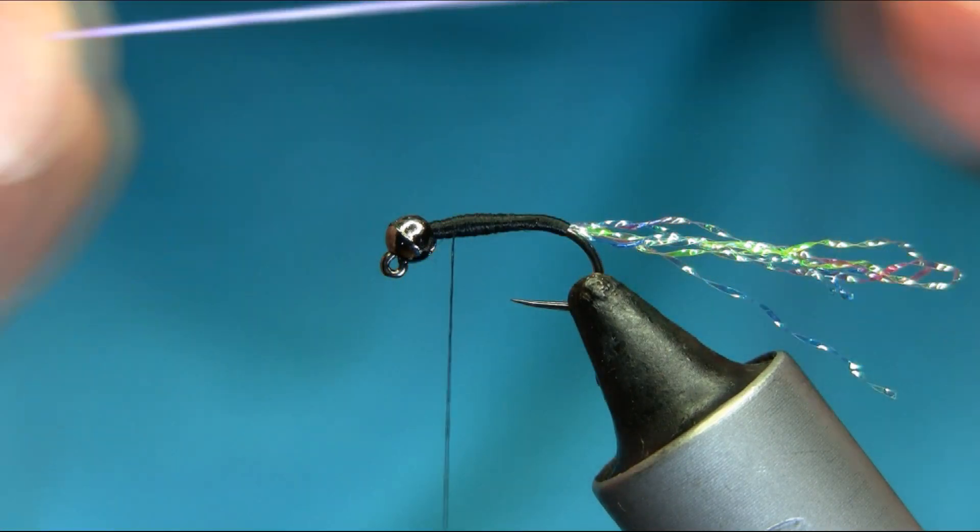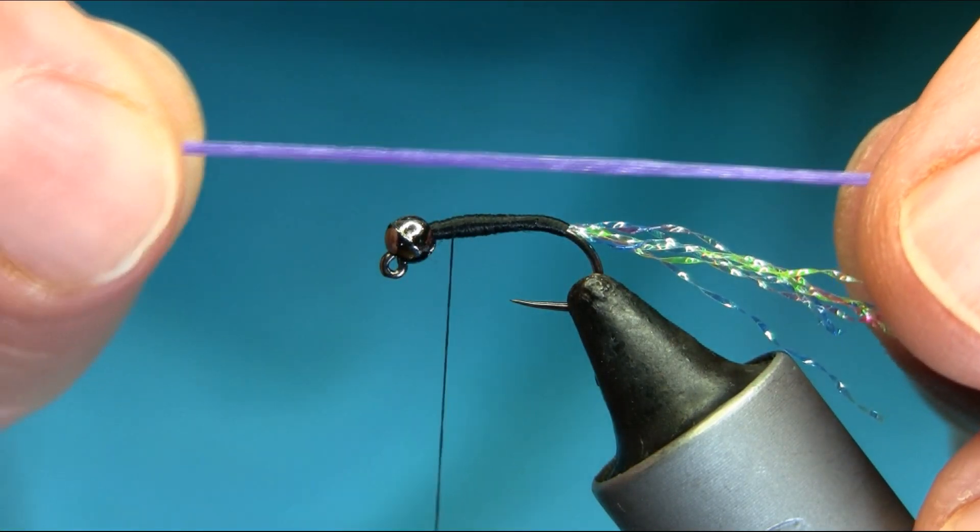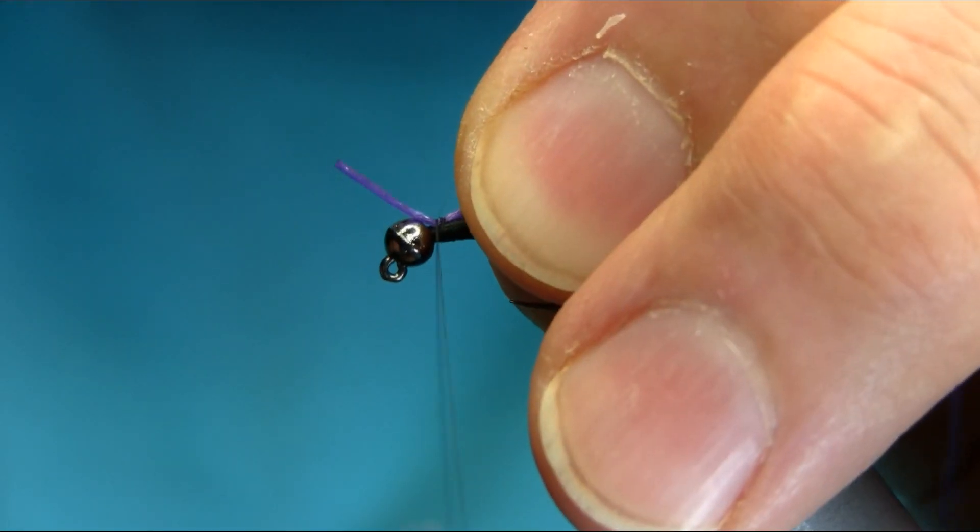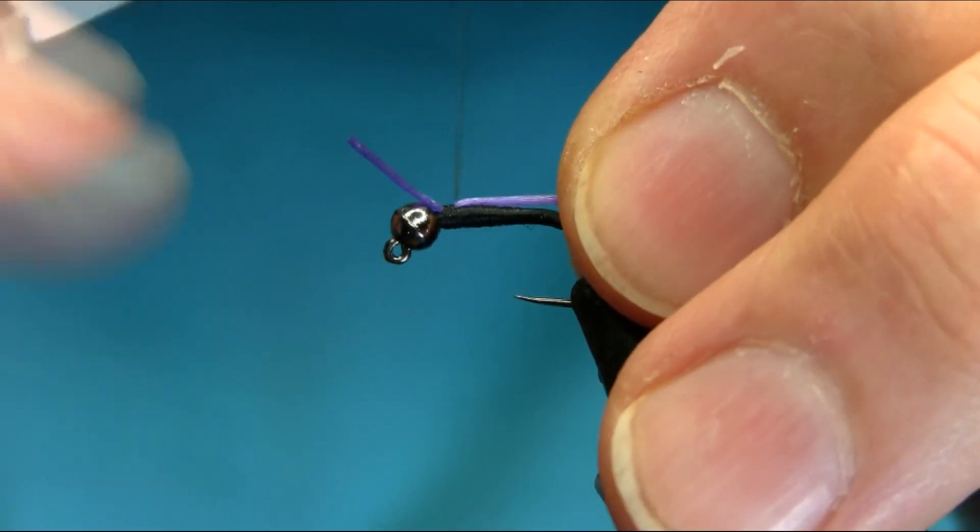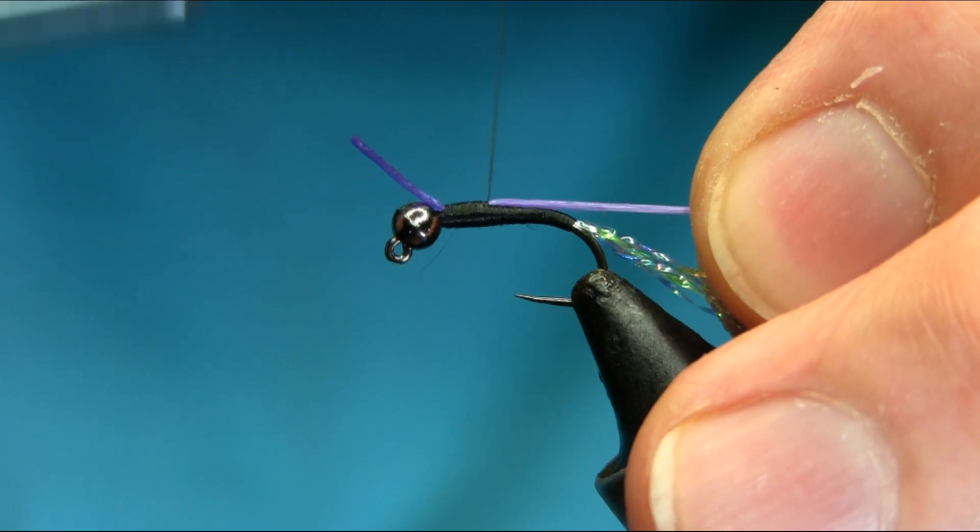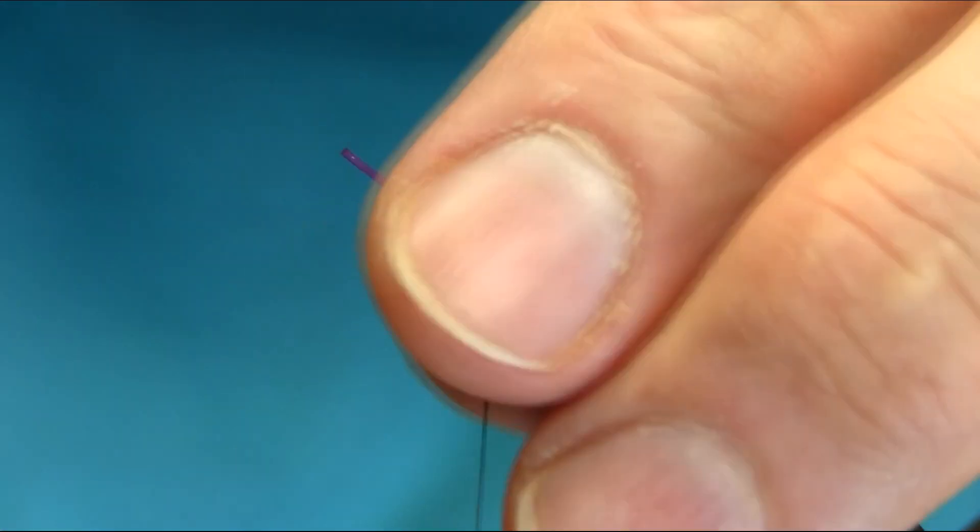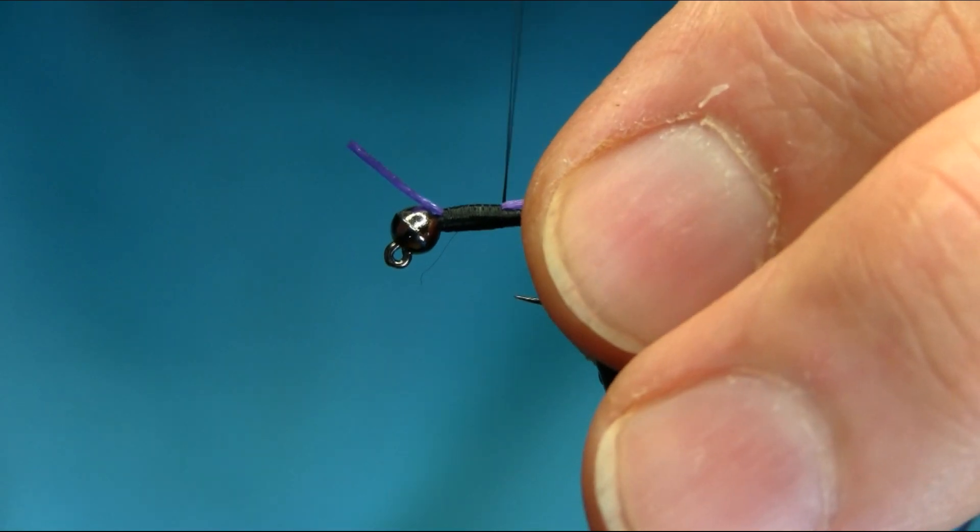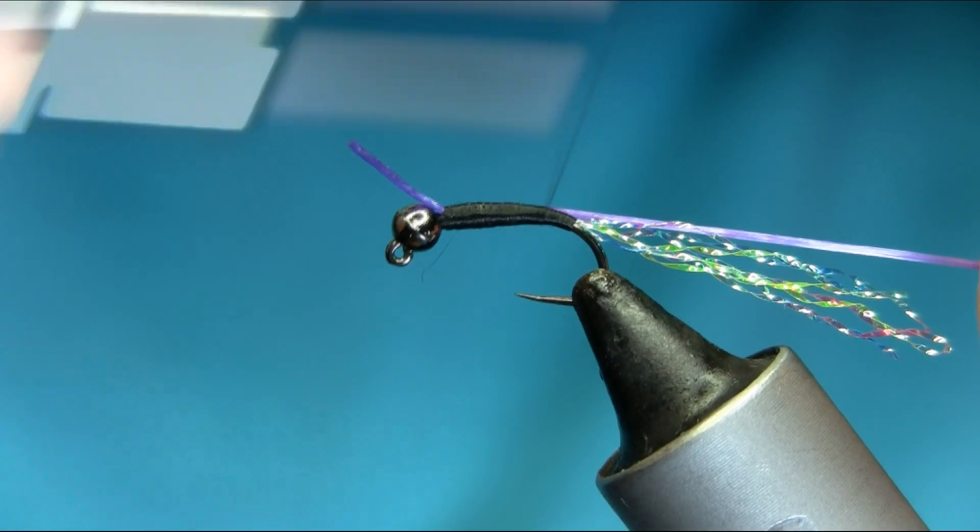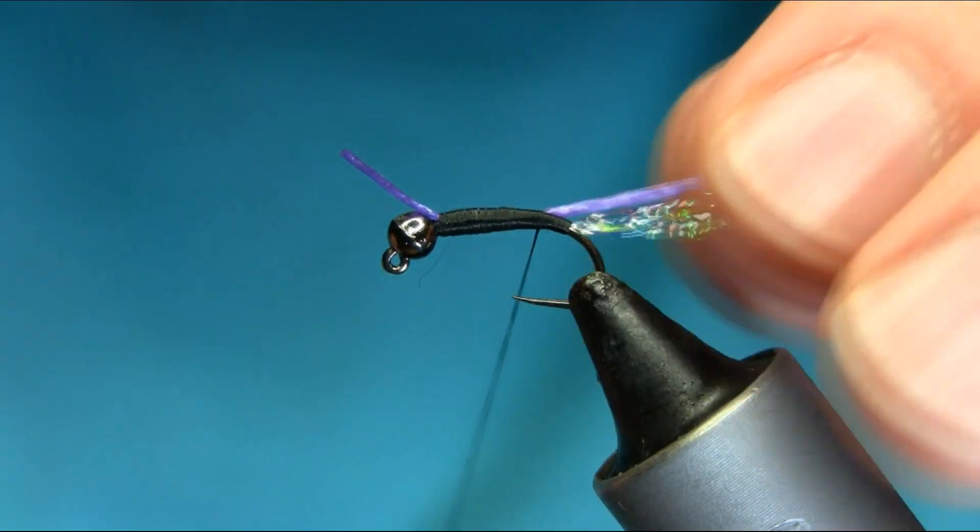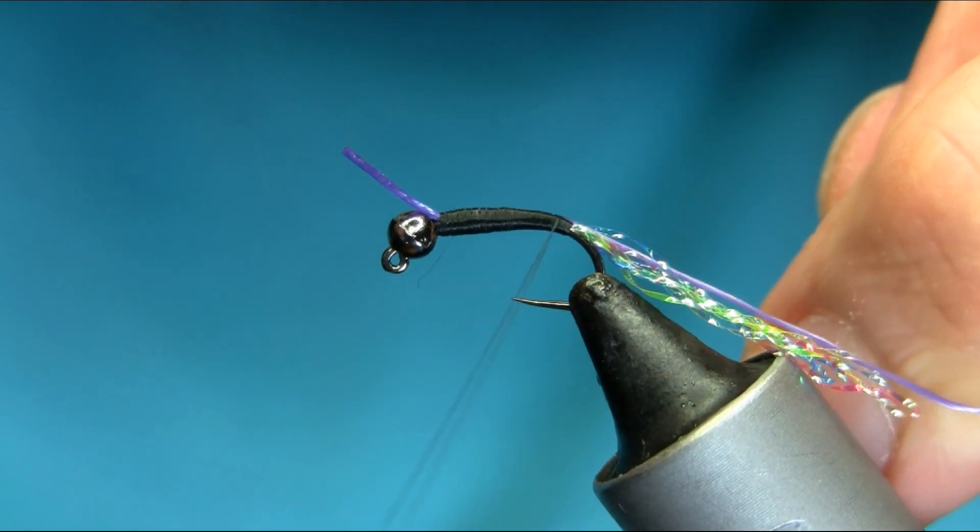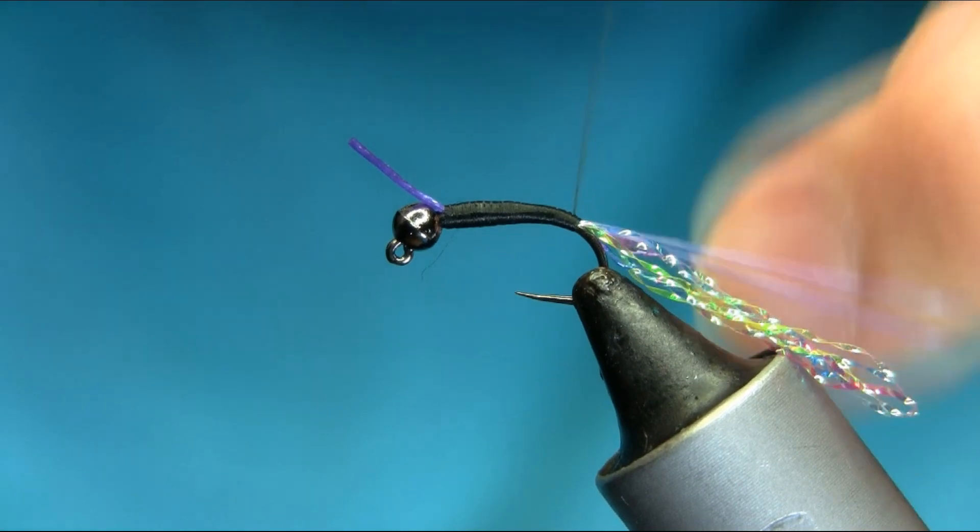For the body I'm going to be using this is a purple, light purple Spawn Flex. Now this is a really good color for the grayling fishing. Along with pink. So once you catch on top, give it a nice stretch. Sorry, my thread is actually splitting. Now give it a good stretch and go all the way down to the bend.